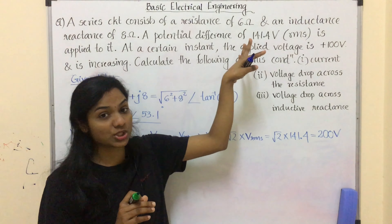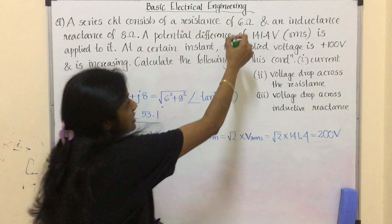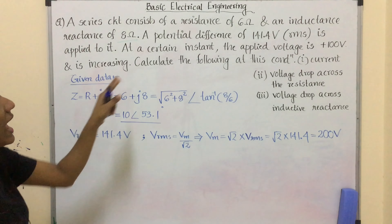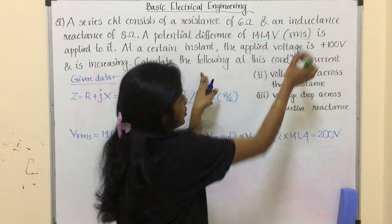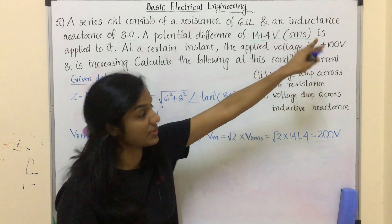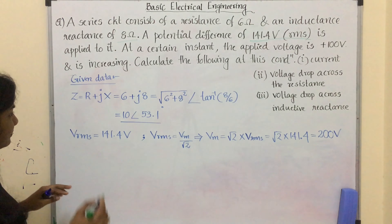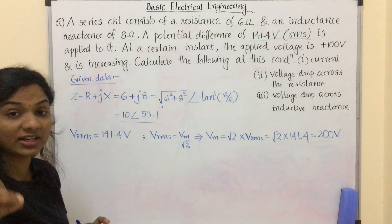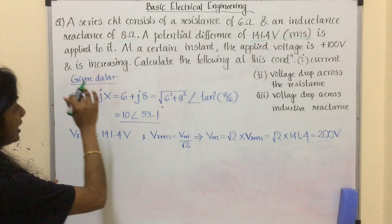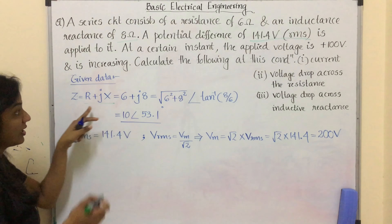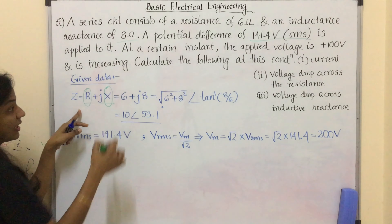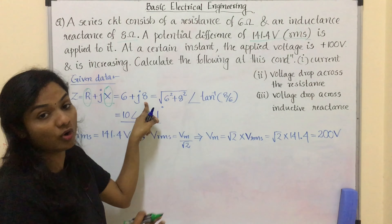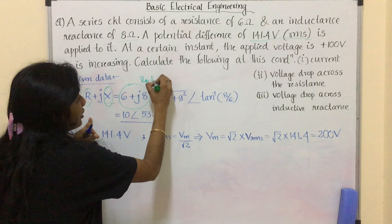From this question, the given data: resistance R = 6 ohm, inductive reactance X = 8 ohm, and applied voltage = 141.4 volt RMS. Since resistance and reactance are given, we represent them in impedance form as R + jX, which gives us 6 + j8 ohm in rectangular form.